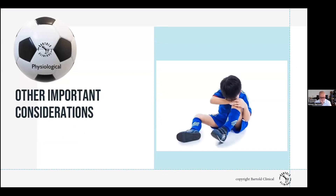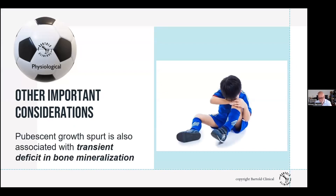A couple of other important considerations. When we have the pre-pubescent growth spurt, this is also associated with a transient deficit in bone mineralisation. So we get a transient period of osteopenia. And this is really quite important.